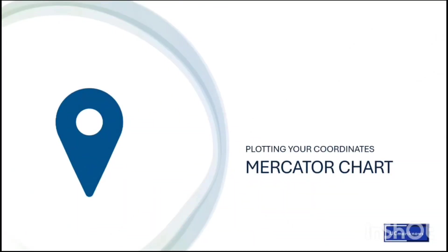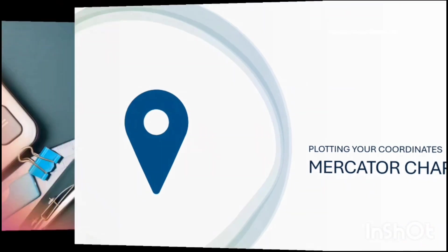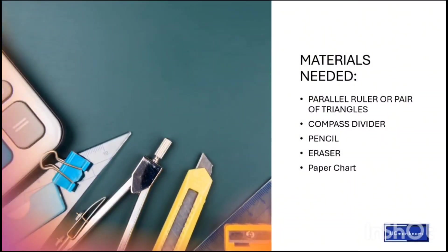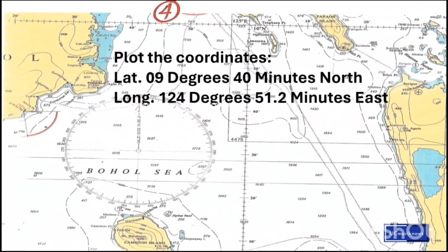Today I will show you how to plot coordinates in a Mercator chart. You need the following materials. We are going to plot these coordinates: latitude 9 degrees 40 minutes north, and longitude 124 degrees 51.2 minutes east.